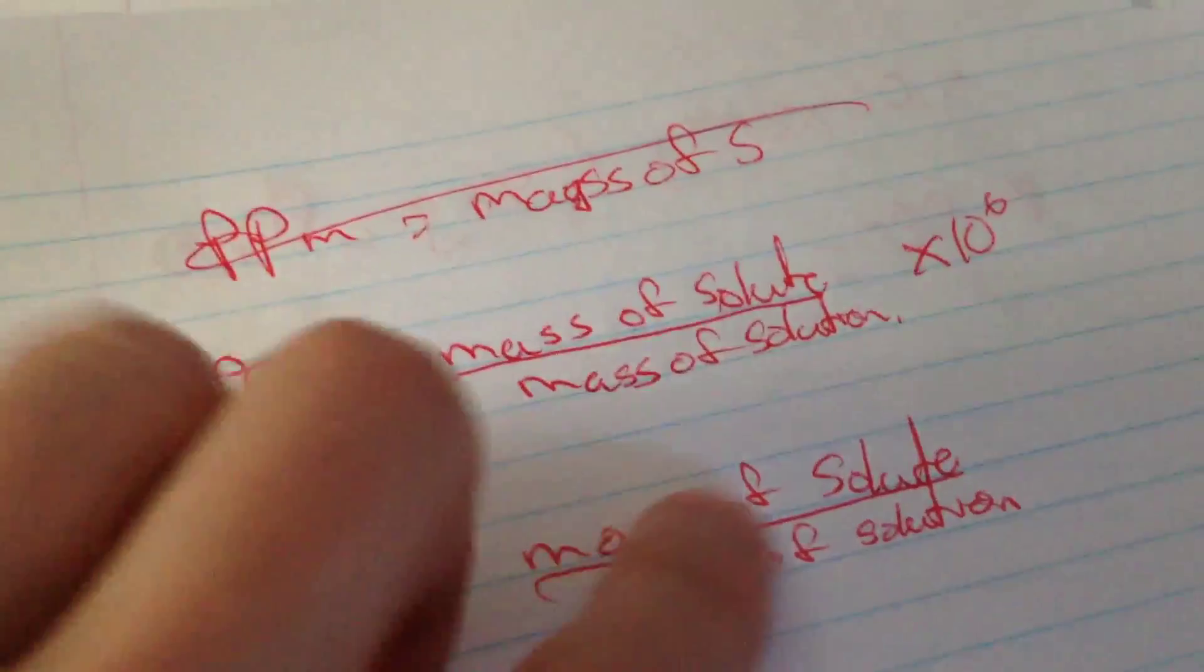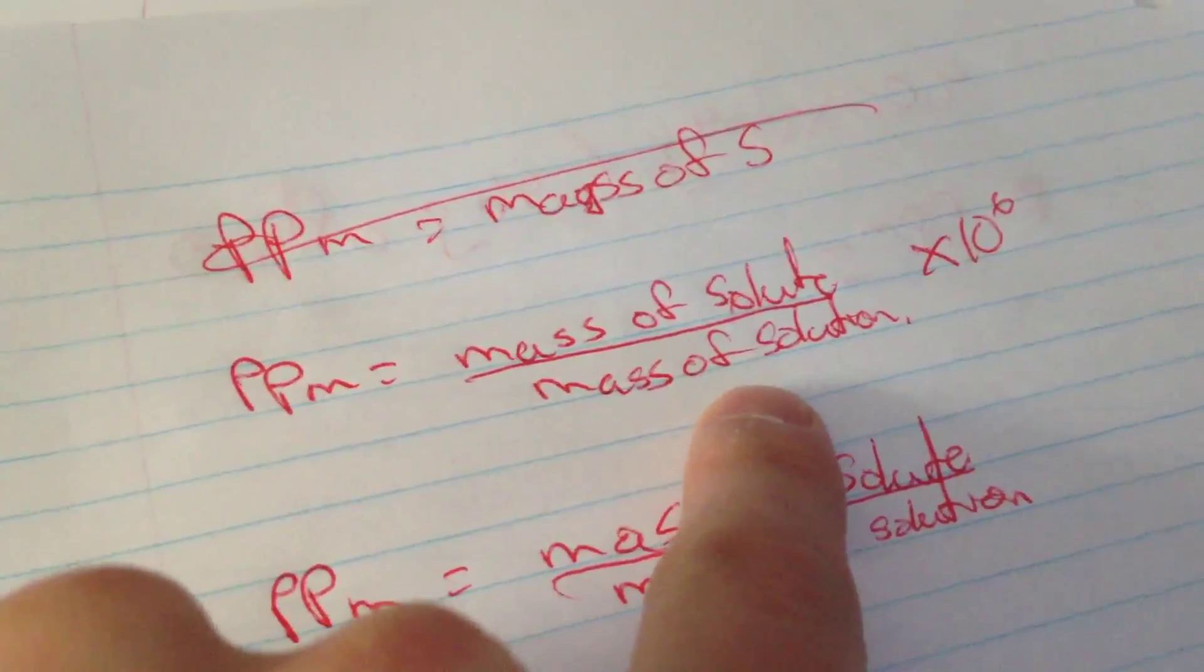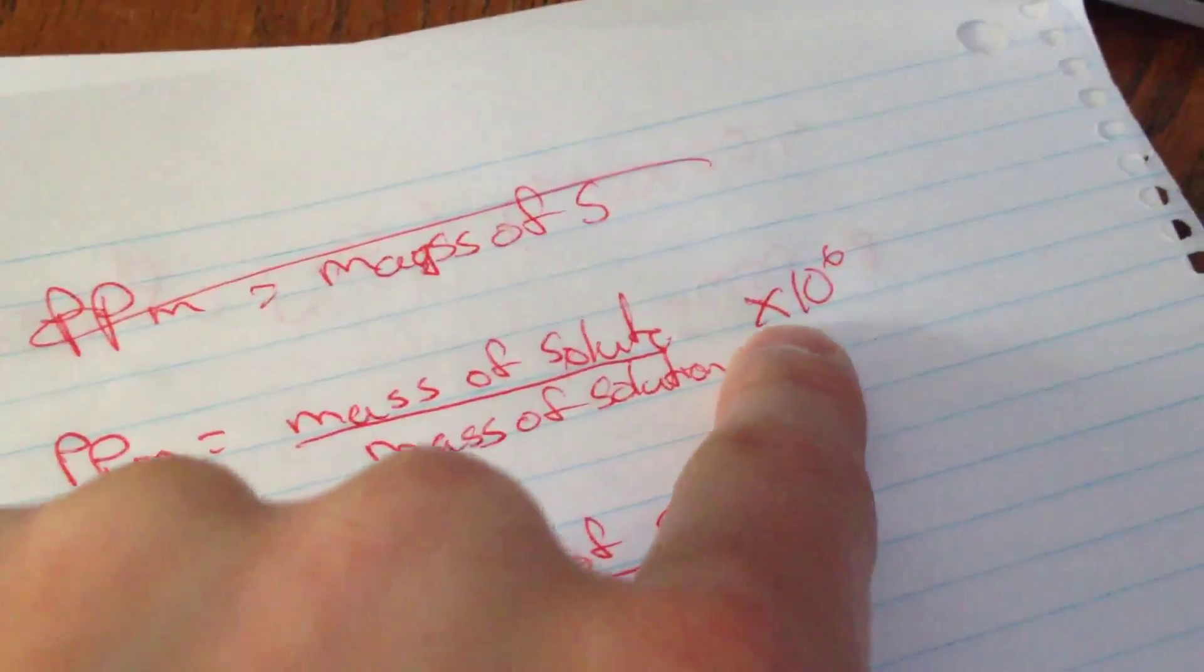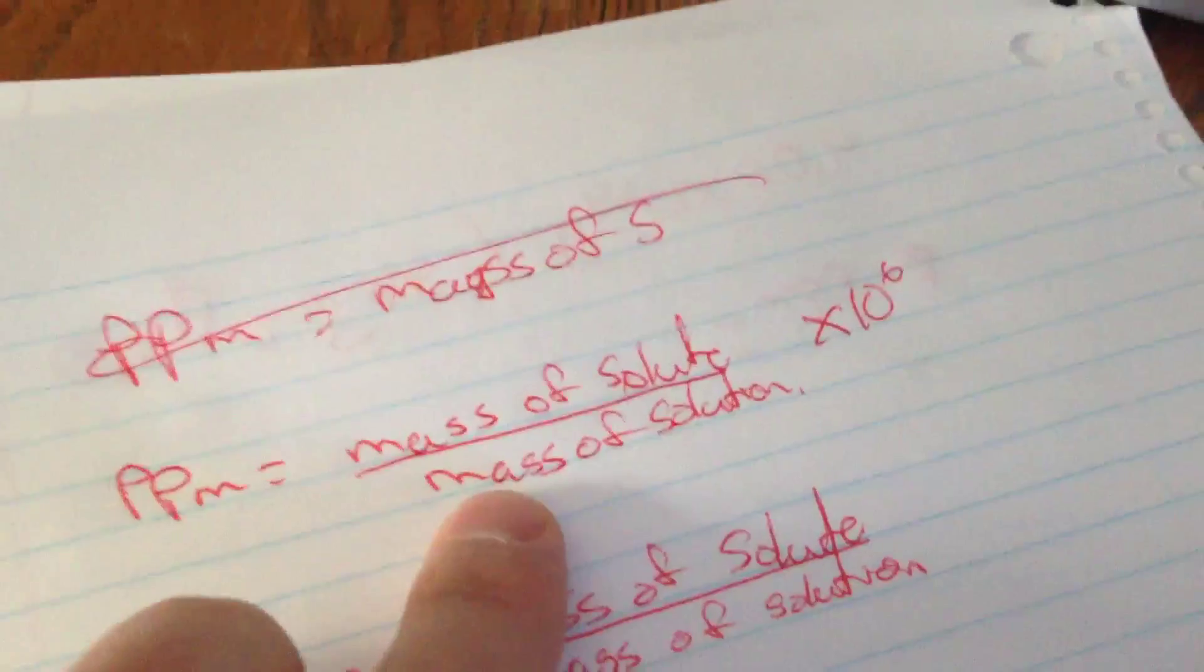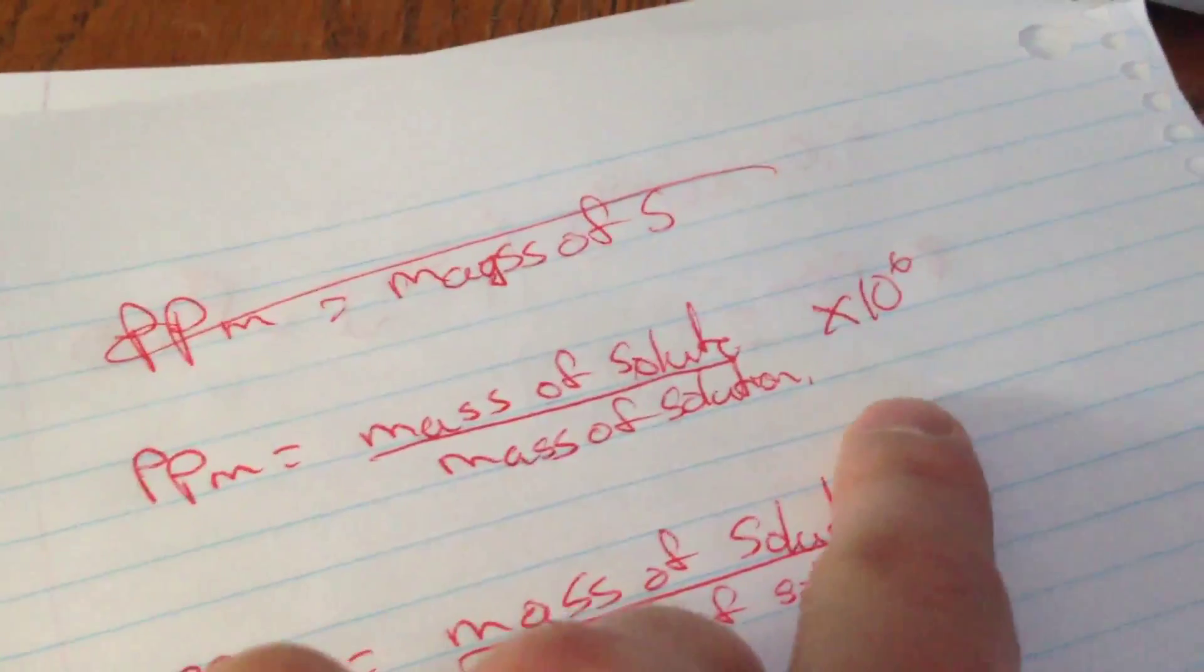the formula for parts per million looks like this: PPM is mass of solute over mass of solution times 10 to the 6. 10 to the 6 is just a million. So if you take the mass of what's being dissolved and what it's being dissolved into, times it by a million, that'll give you parts per million. Now,